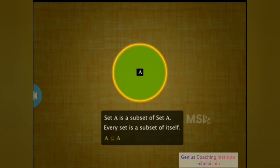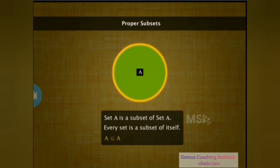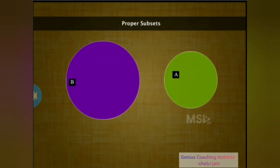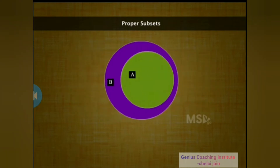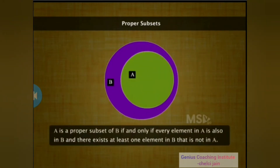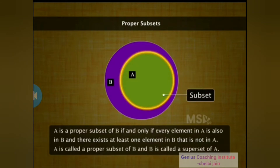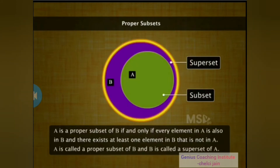Even though there is nothing factually wrong with this, it doesn't seem very proper. We want our subsets to be proper. A proper subset of a set is one that can fit into that set. In other words, A is a proper subset of B if and only if every element in A is also in B and there exists at least one element in B that is not in A. When A is a proper subset of B, we say B is a superset of A.